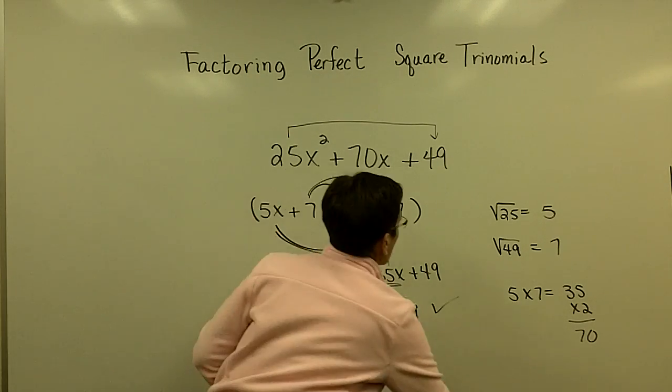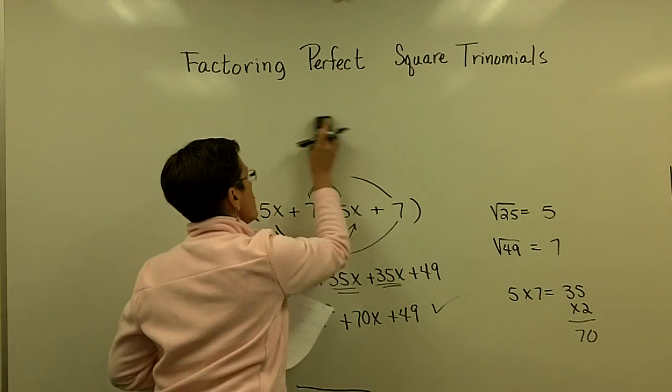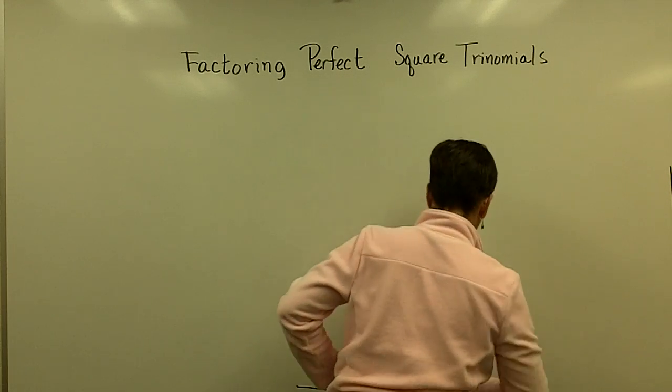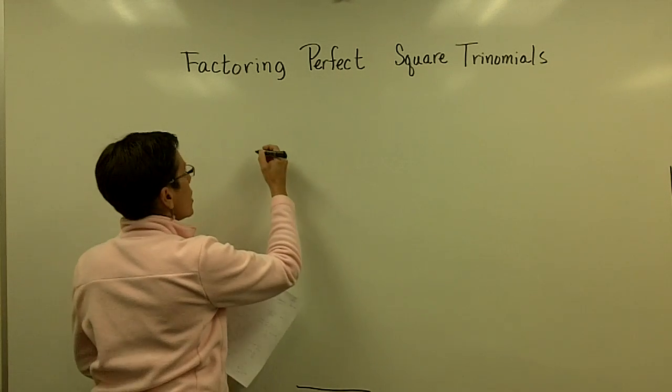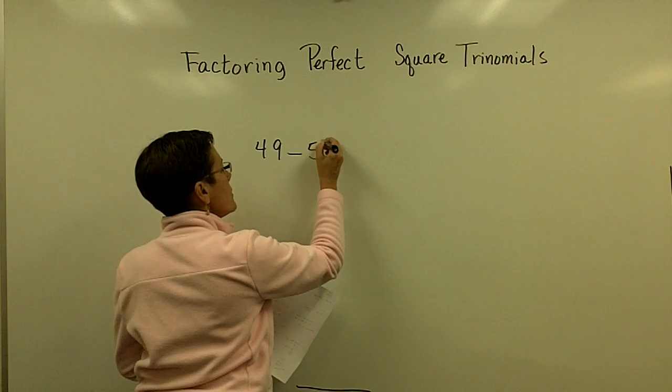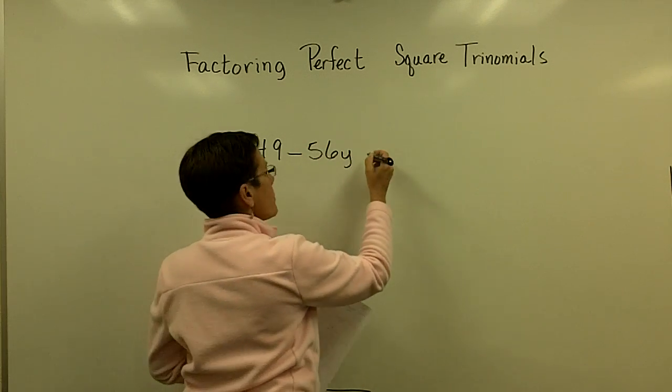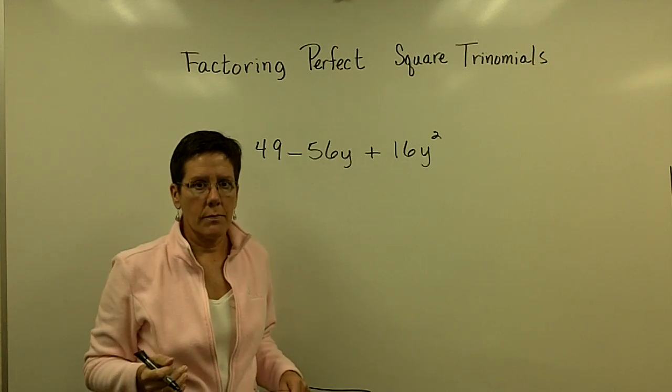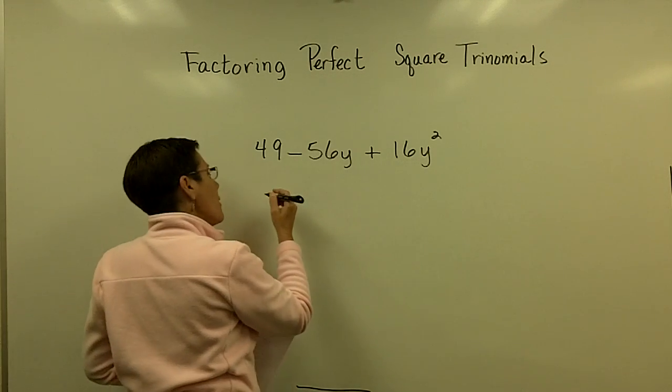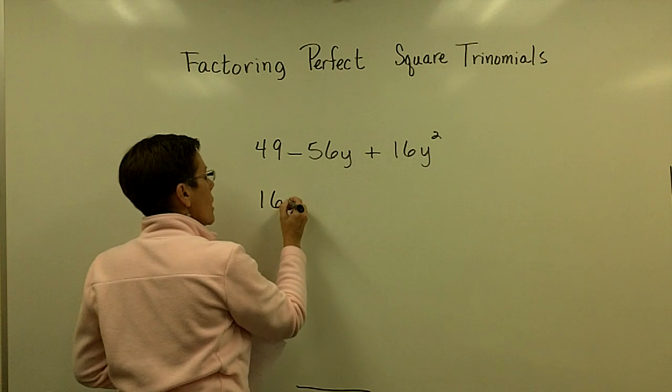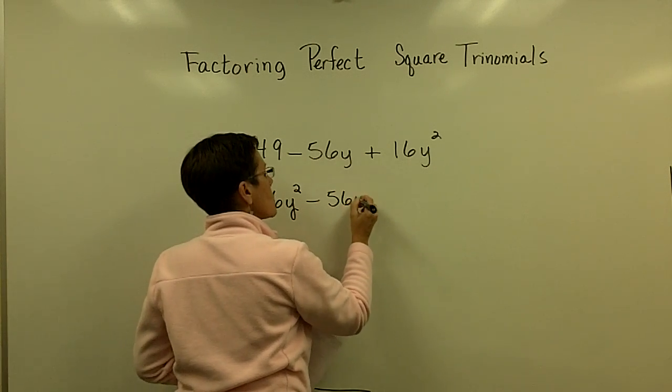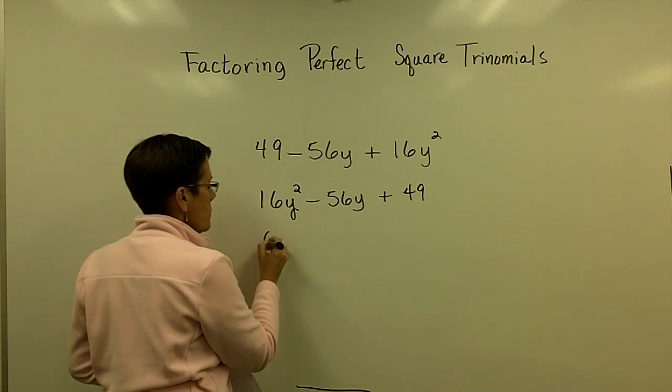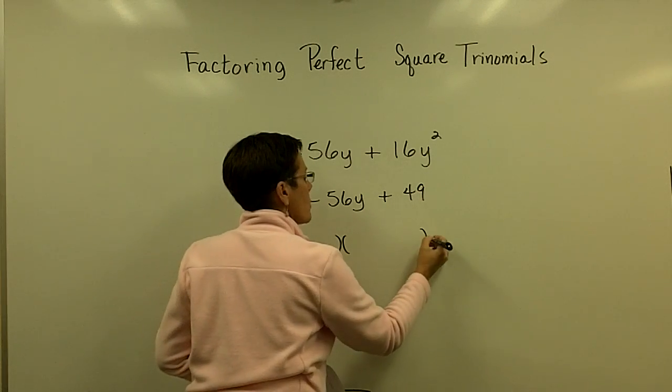Let's do one more. Let's take a look at a problem that's out of order. So let's go with 49 minus 56y plus 16y squared. First of all you're welcome to rearrange it. Absolutely welcome to rearrange it. And I would almost encourage it. So I would call this 16y squared minus 56y plus 49.